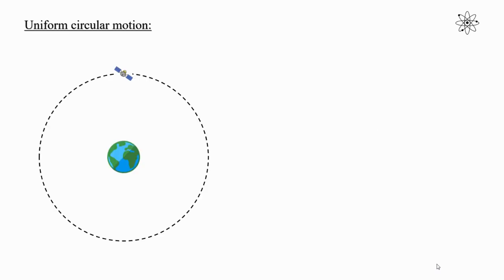Hello students. Our today's topic is Uniform Circular Motion. In this video, we are going to discuss a few characteristics of Uniform Circular Motion. For that, let's take an example of a satellite revolving around the Earth.